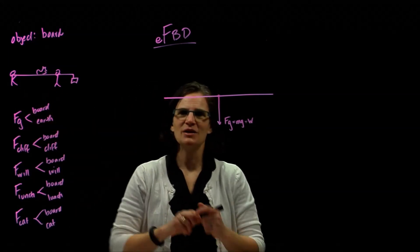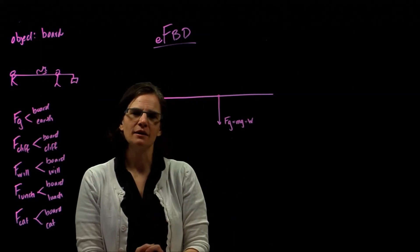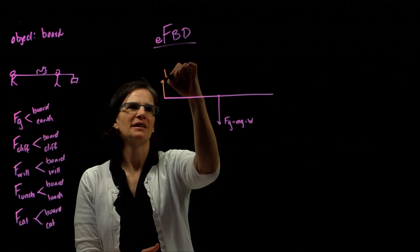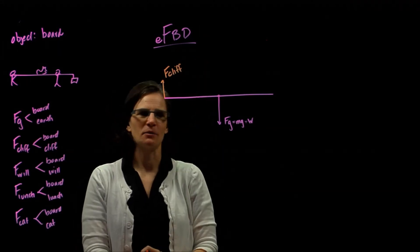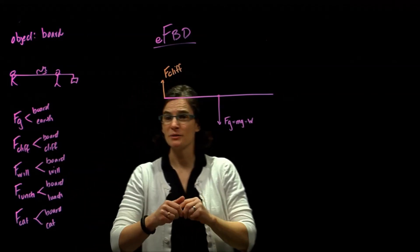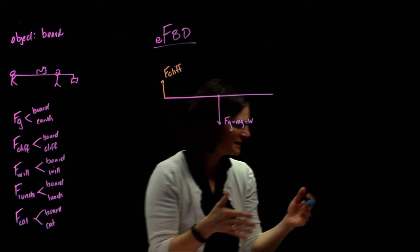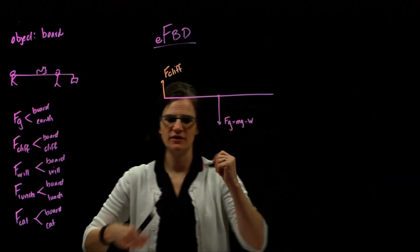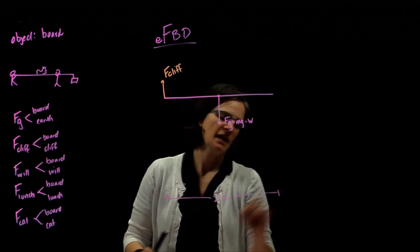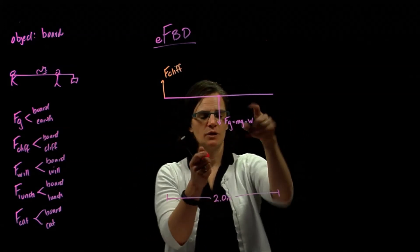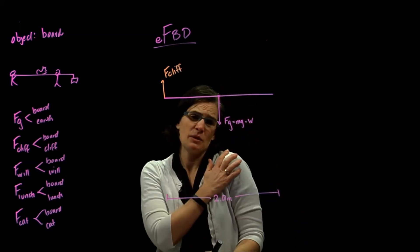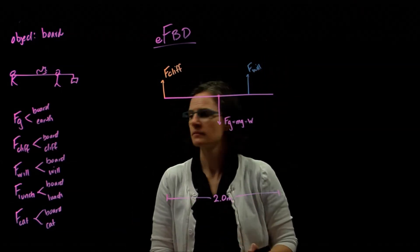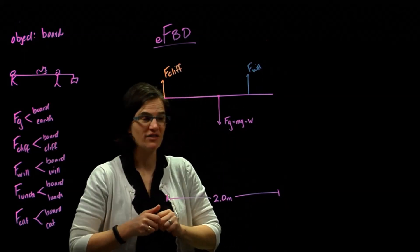Cliff is at one end of the board. The board is resting on his shoulder, pushing his shoulder down, so Cliff is pushing up on the board — here is the force of Cliff acting upward. Will is holding the board on the other side. The board is 2 meters long and Cliff is 0.6 meters from the other end. Will is also resting the board on his shoulder with the board pushing down, so here is the force of Will acting upward.